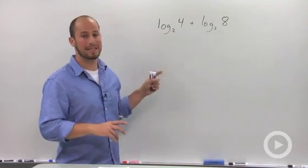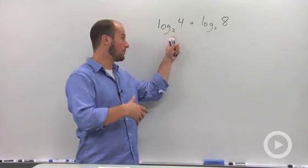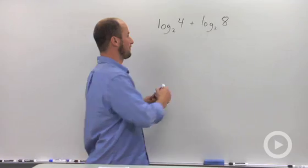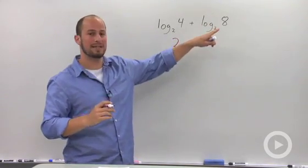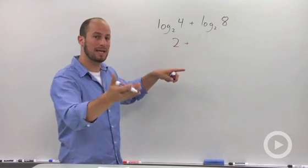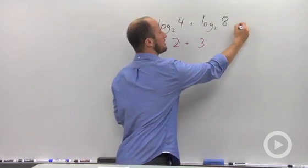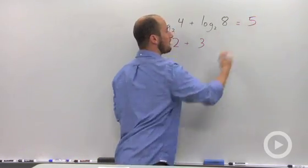So log base 2 of 4 is basically saying what power of 2 will give me 4. So that's 2. Log base 2 of 8 is saying what power of 2 will give me 8, which is 3. So 2 plus 3, this is going to be equal to 5.